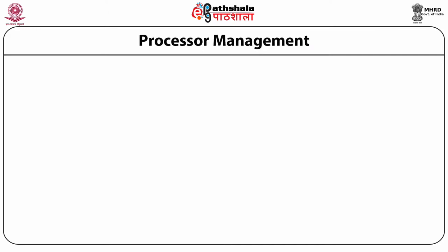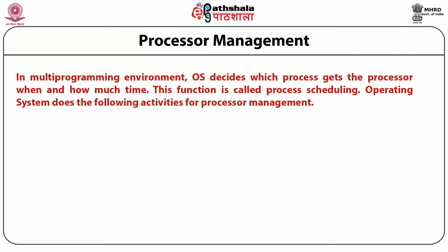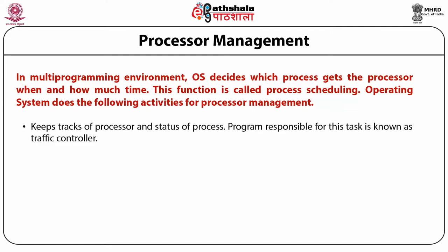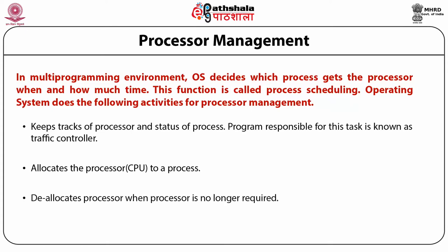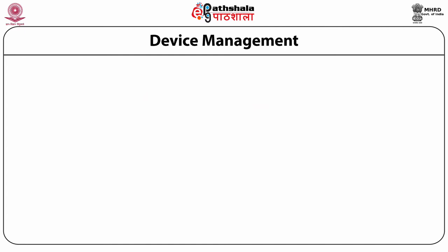For processor management, in a multiprogramming environment, the operating system decides which process gets the processor, when, and how much time. This function is called process scheduling. The operating system keeps track of the processor and status of each process. The program responsible for this task is known as the traffic controller. It allocates the CPU to the process as well as deallocates the processor when the process is no longer required.